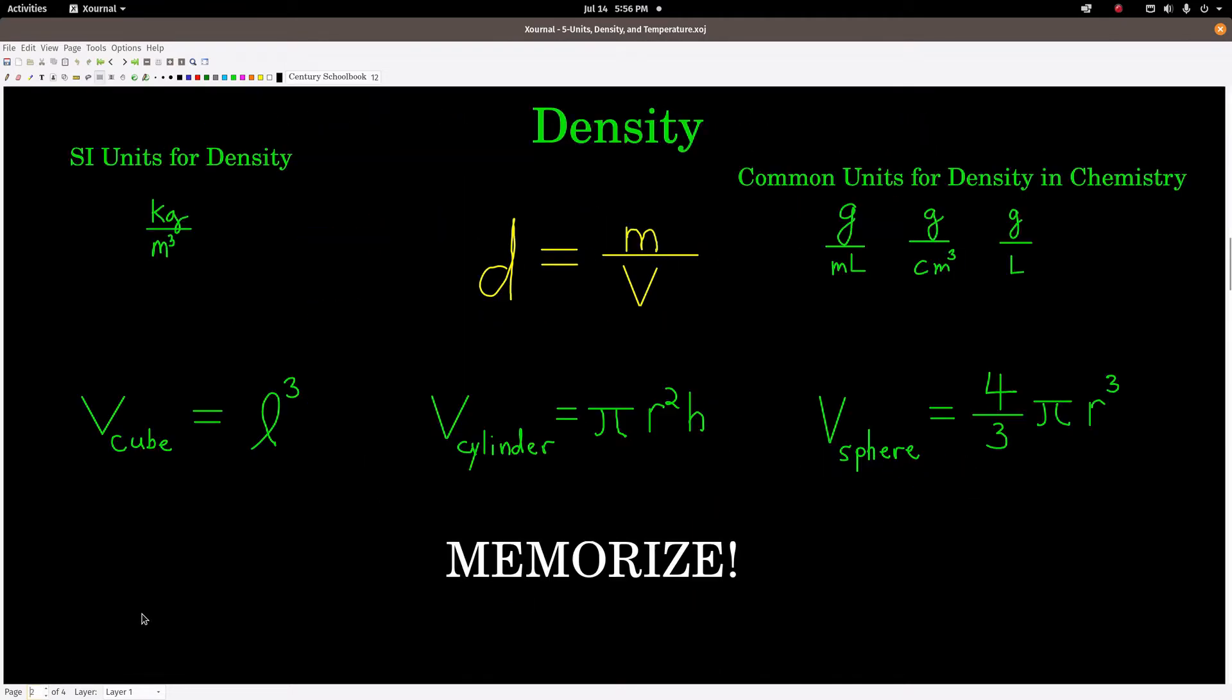Next, density. First of all, what is density? The formula is right here. D stands for density. It's equal to M, which is the mass, divided by the volume, capital V.